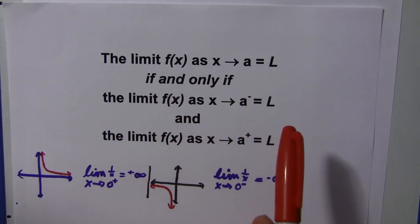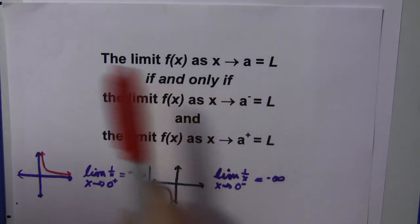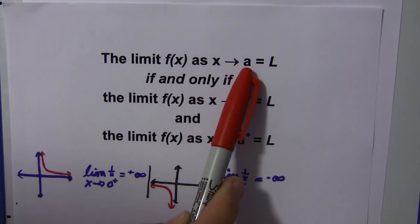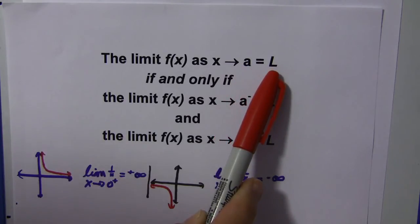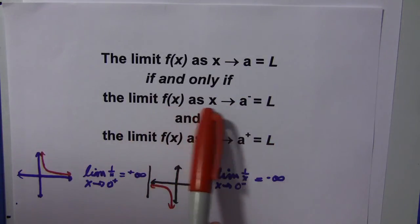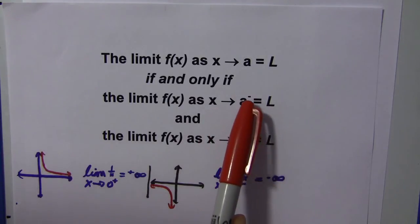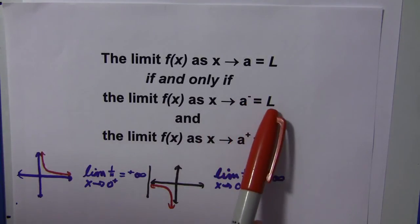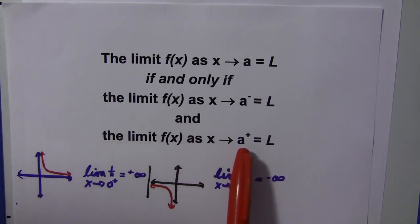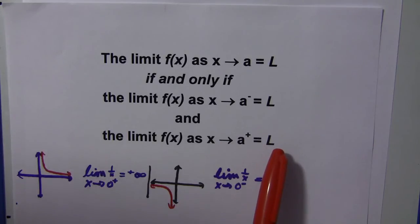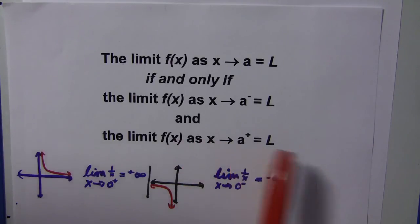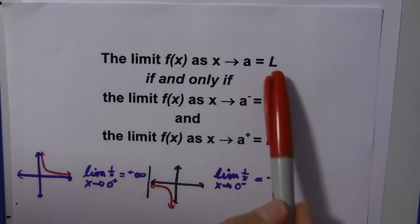And if you've taken a course, or you're in a course of precalculus or calculus, you know that the limit of f of x as x goes to a equals l, if and only if the limit of f of x as x approaches a from the left, that little negative sign means from the left, equals l, and the limit of f of x as x goes to a from the right equals l.